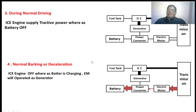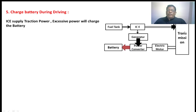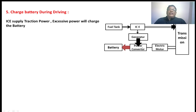In this mode of operation, the IC engine will be off. In the fifth mode — charge the battery during driving — whatever tractive power is required to the vehicle will be supplied by the IC engine, and the excessive power will be given to the battery for storage. The IC engine gives mechanical power to the generator, the generator converts mechanical power into electrical power, and this converter converts AC power into DC power that is stored in the battery.